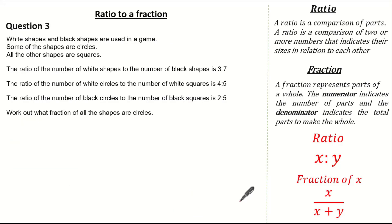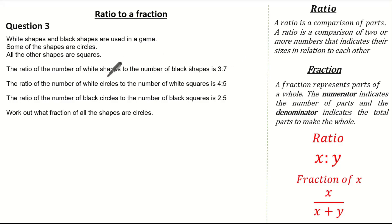Looking at our last exam question: white shapes and black shapes are used in a game. Some of the shapes are circles and all the others are squares. The ratio of white shapes to black shapes is three to seven, the ratio of white circles to white squares is four to five, and the ratio of black circles to black squares is two to five. We're asked to work out what fraction of all the shapes are circles. See if you can give it a go and press pause if you need.